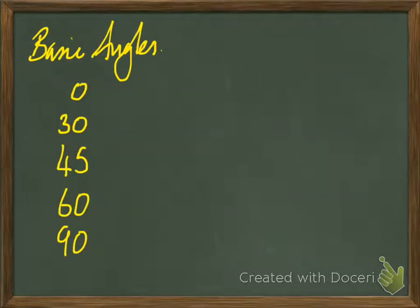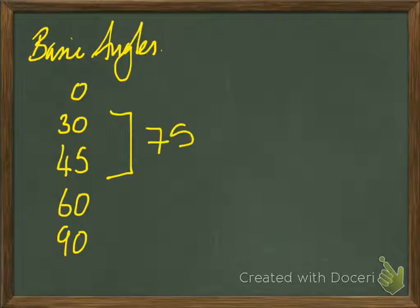So just a quick talk about the basic angles — these just come up in mathematics all the time. For those of you doing A level, when you come to use some of the more complex trigonometric identities, you'll be able to find values of say 75 degrees, because you just use these two basic angles as an example and that will give you the 75 value you want.